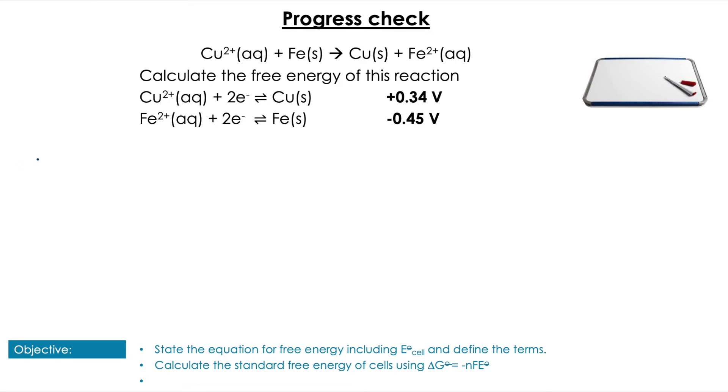Remembering what we've already done, you need to calculate your E°cell value first, and of course make sure you reverse your oxidation half-cell so that's the most negative. In this case, we're going to get 0.34 plus 0.45, which equals 0.79 volts. Then once you have that, you can just plug those values into your equation for ΔG° using two moles of electrons, which is the number transferred in the equation, times the E°cell value.